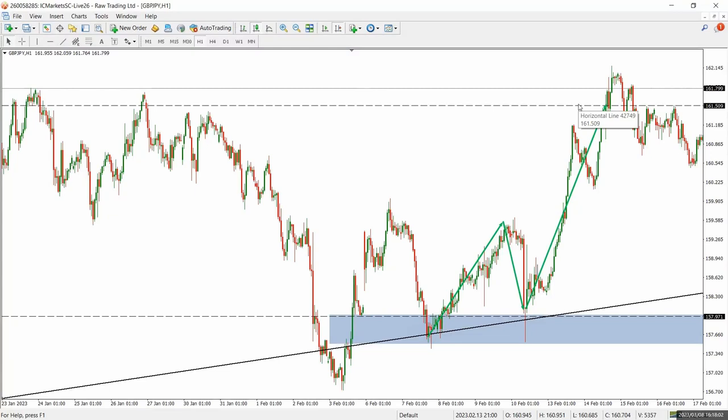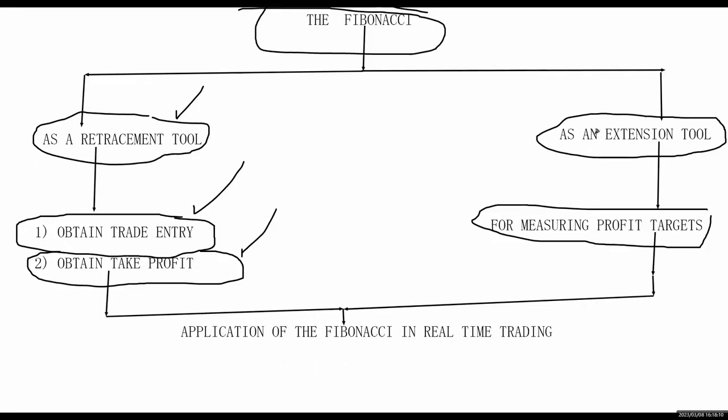Before we finish, let's go to the whiteboard to make sure we're following what we outlined. We've covered the Fibonacci as an extension tool. Remember: when you are very sure the market is continuing the trend, you bring out your Fibonacci from the new high to that low, which gives you the value of the 161.8 extension point. Set your take profit right there and manage your trade effectively. As long as the trend is strong and has confirmed continuation, trust me — the 161.8 level is definitely going to be hit.